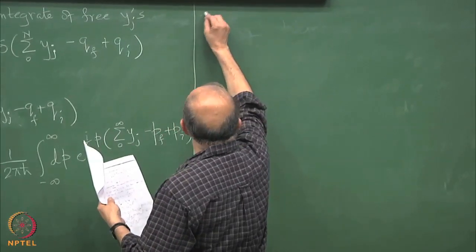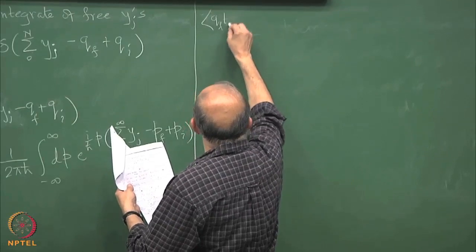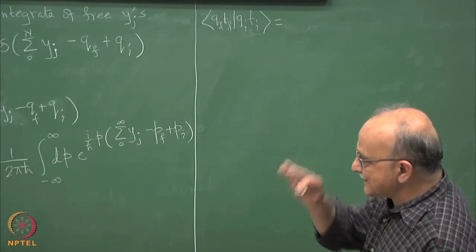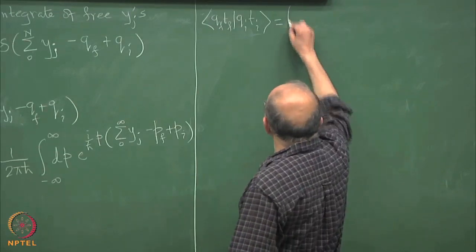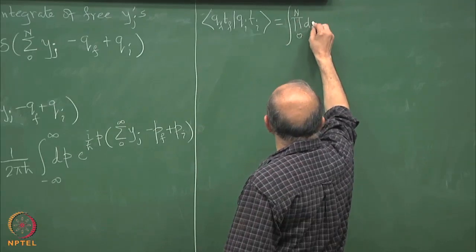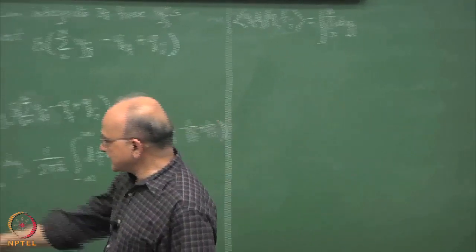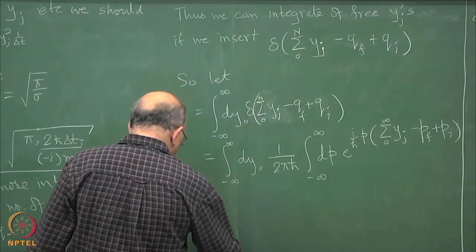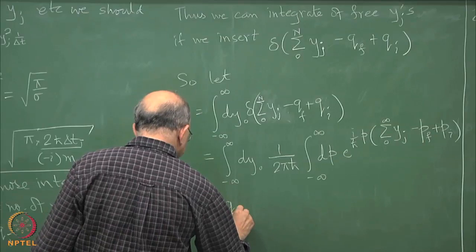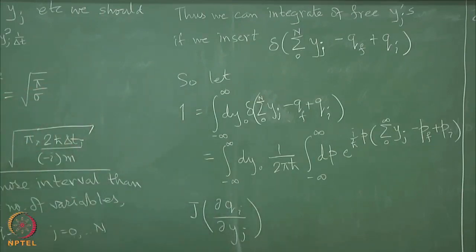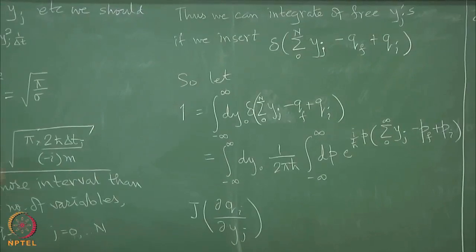So this has to be inserted and once we do this, ignoring the limit going to infinity part, we write the integral as a product over j from 0 to n of dy_j. I traded the q's for the y's and I need to put the Jacobian of this transformation. The Jacobian of transformation from dq_i's to dy_j's is actually 1.